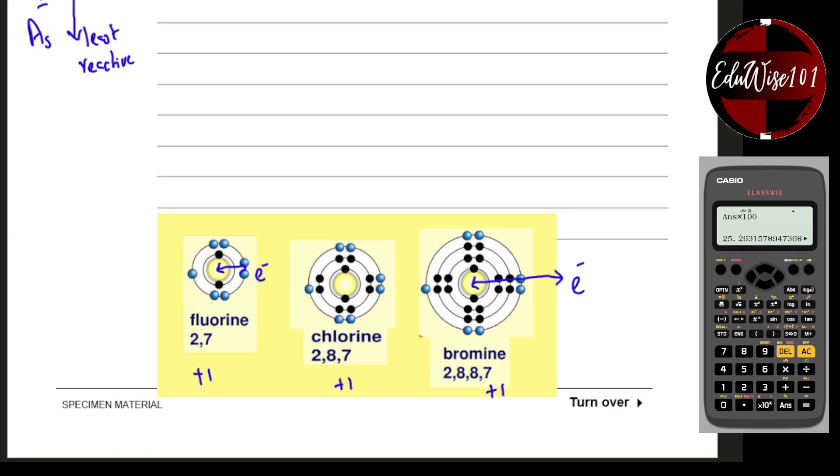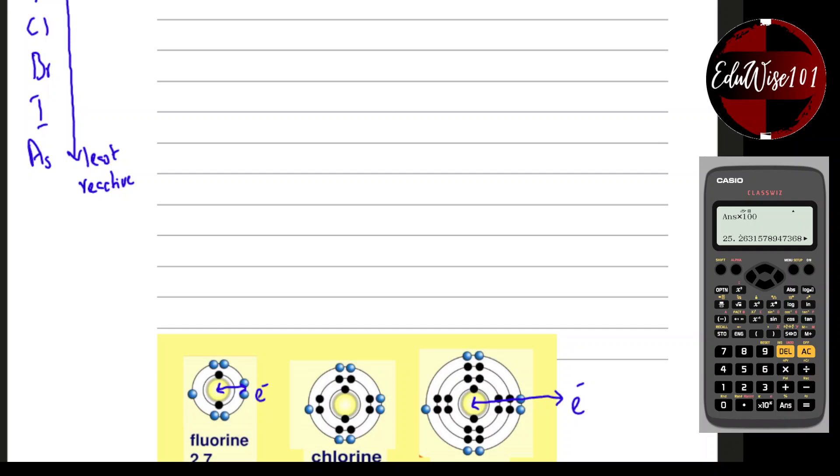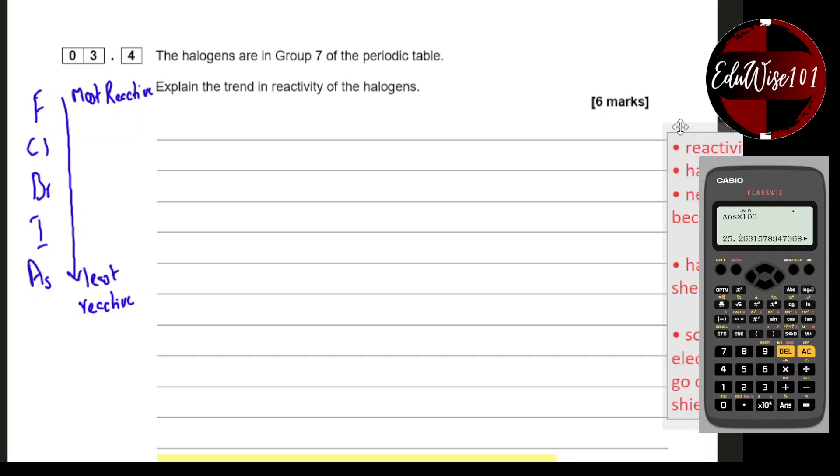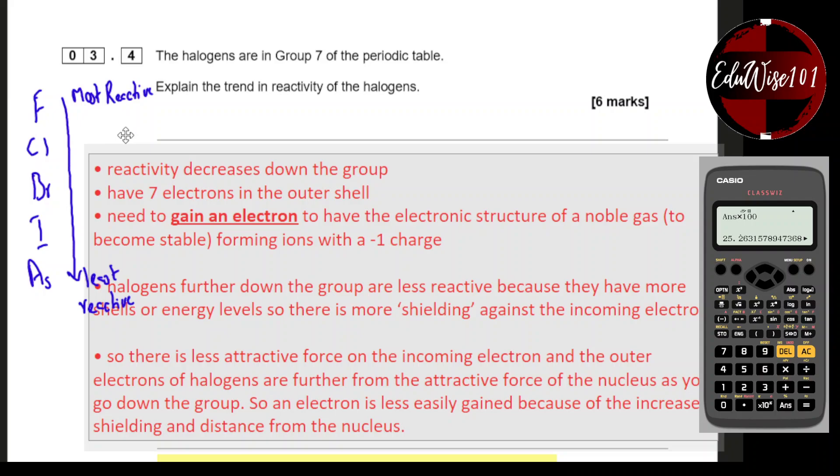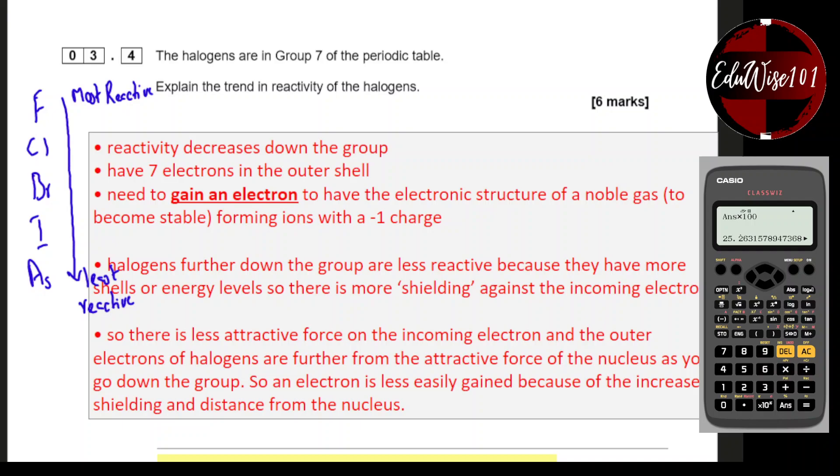This is a confusing question for most students. Let me show you the answer. Reactivity decreases down the group. They all have seven electrons in the outer shell and need to gain one electron to have the electronic configuration of a noble gas and become stable, forming ions with a minus one charge. Halogens further down the group are less reactive because they have more shells or energy levels, so there is more shielding against the incoming electron.